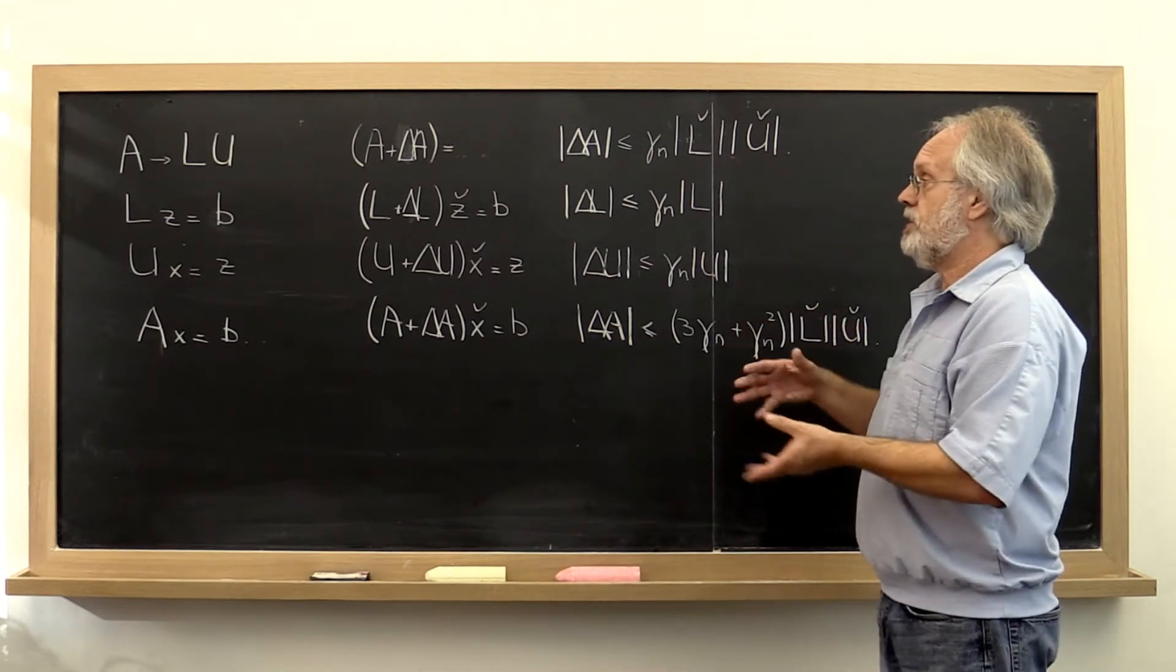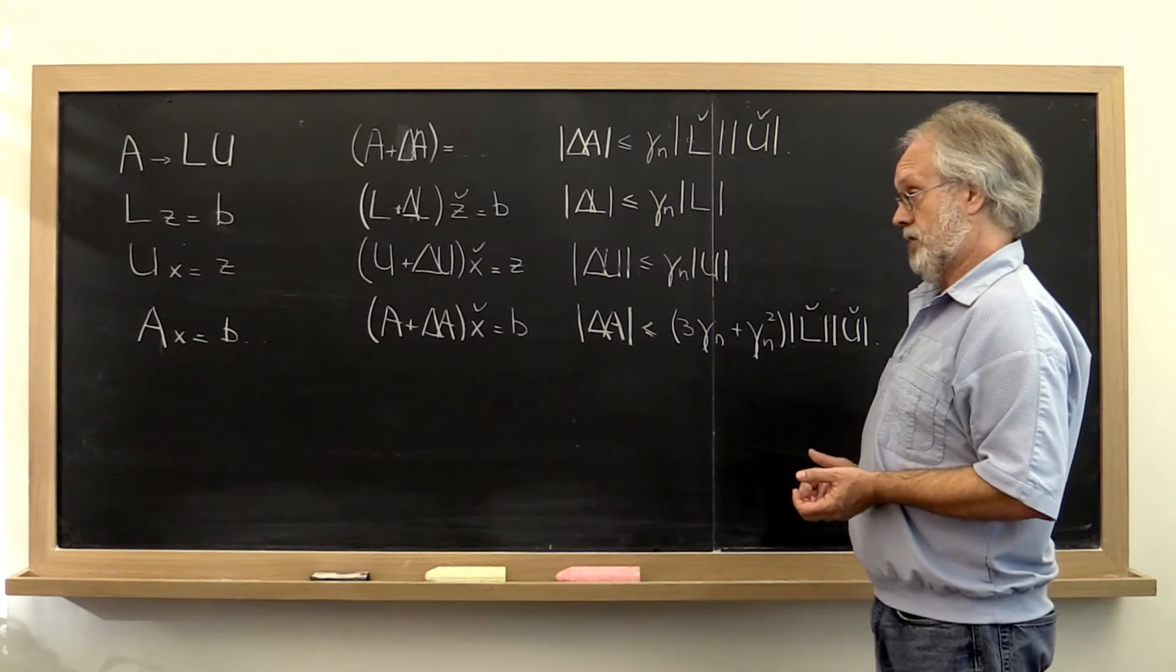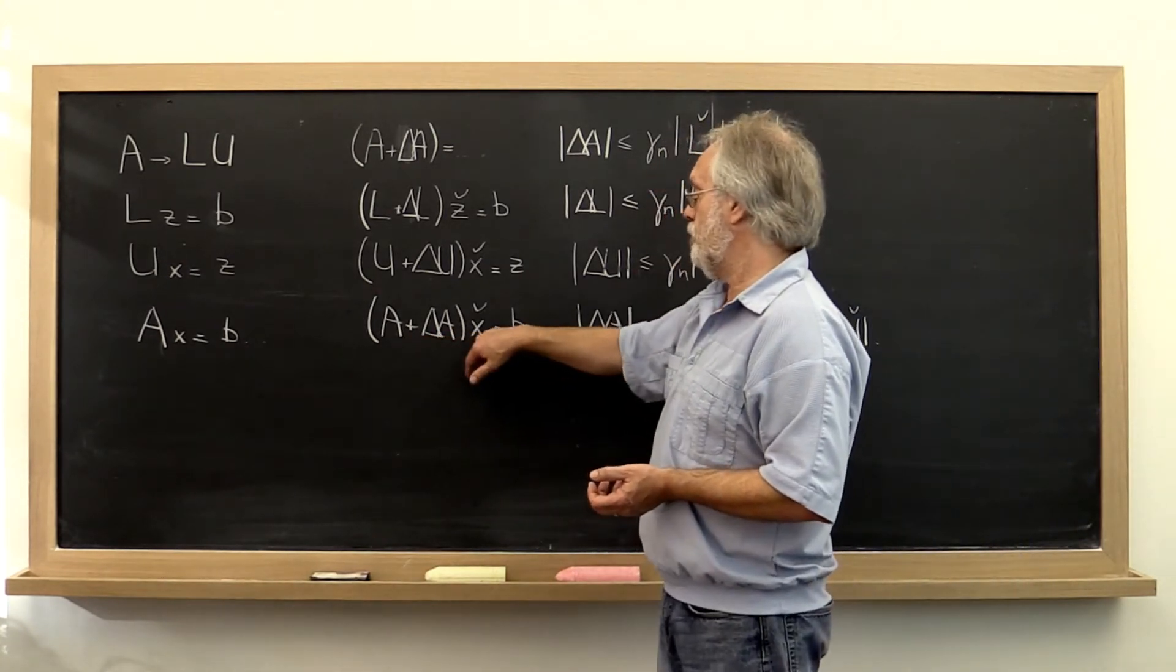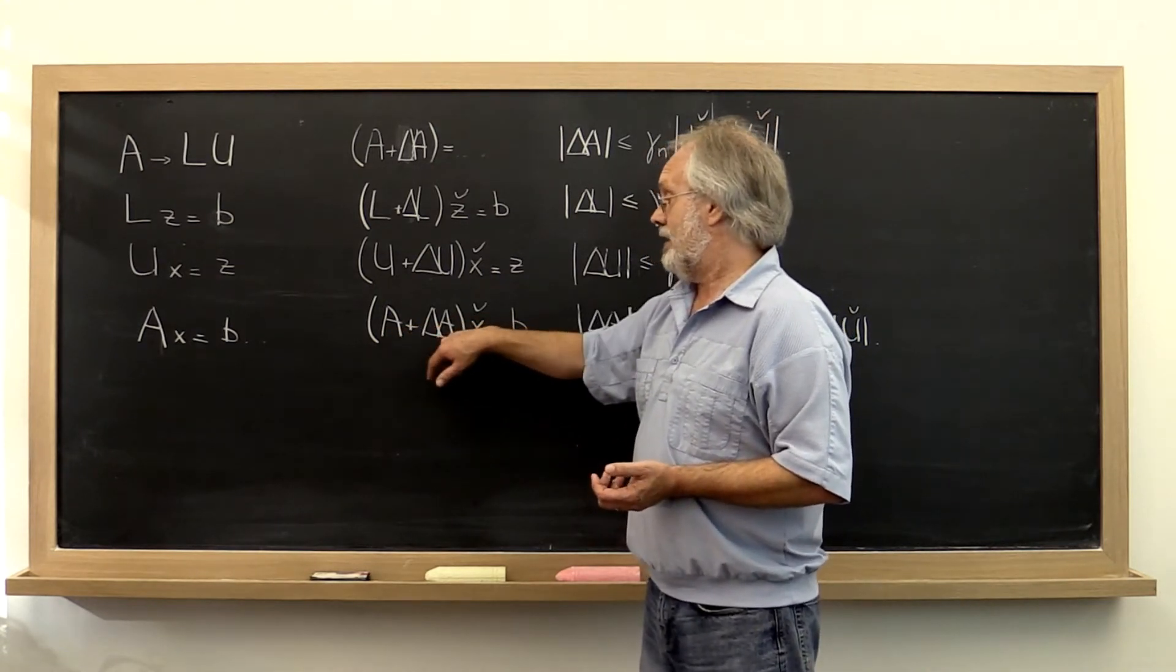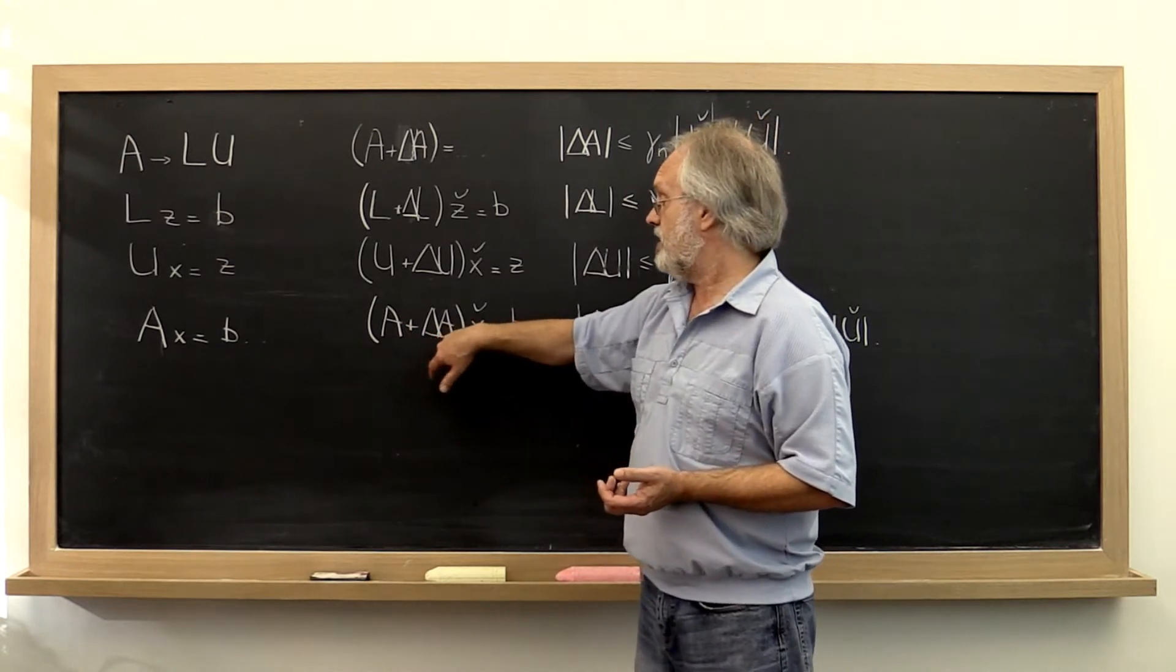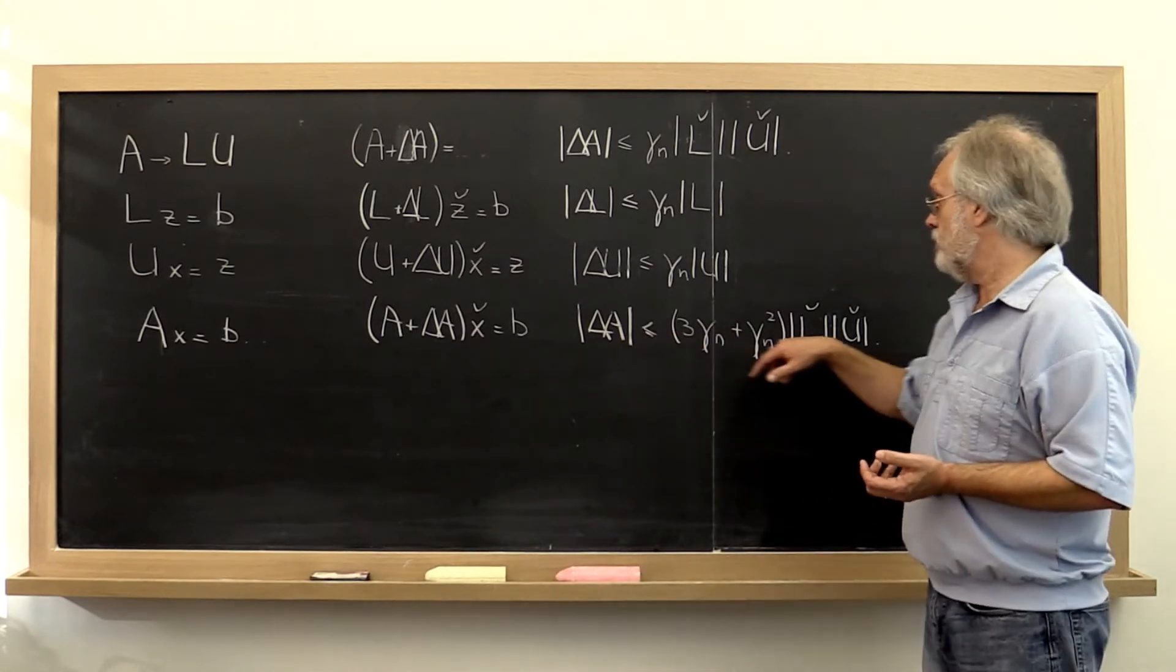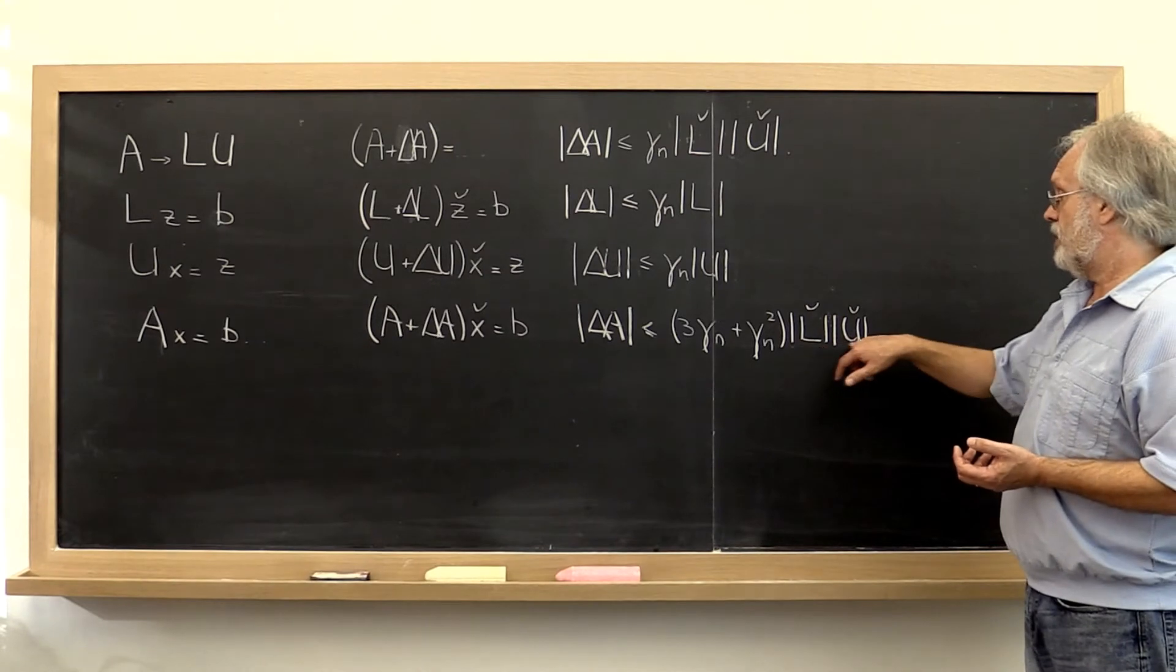If you put all of these things together and you look at how error propagates through all three steps, then you can show that the computed result is the exact result for a slightly perturbed matrix A, where the perturbation, that delta A in absolute value is bounded by, again we get this absolute value of L check and U check.